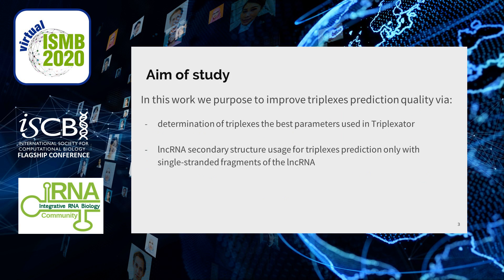We want to improve triplex prediction quality. To do so, we determine the best triplex parameters for Triplexator. As RNA tends to form complicated structures, a particular nucleotide can be involved in Hoogsteen interaction or Watson-Crick interaction, but not in both. Therefore, we suggest that nucleotides that form triplexes should be unpaired, and we aim to incorporate RNA secondary structure prediction into triple helix prediction.